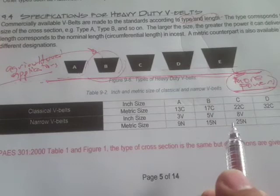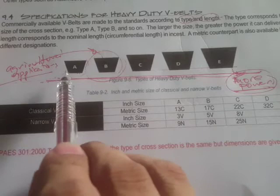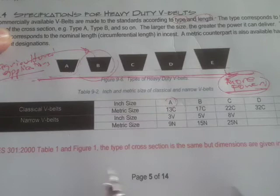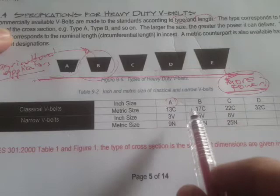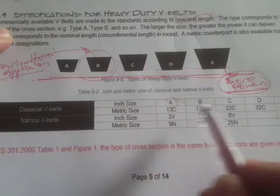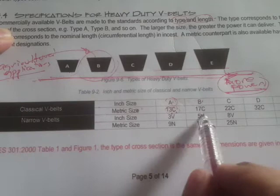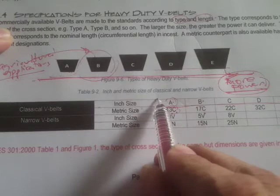Note that the A, B, C, D, E designation is based on inch dimensions. However, in our course standards the dimensions are given in millimeters. For the metric size, there is a different designation — for example, type A becomes 13C, type B becomes 17C, and so on — but in our course we retain the letter-type designation while using millimeter dimensions.